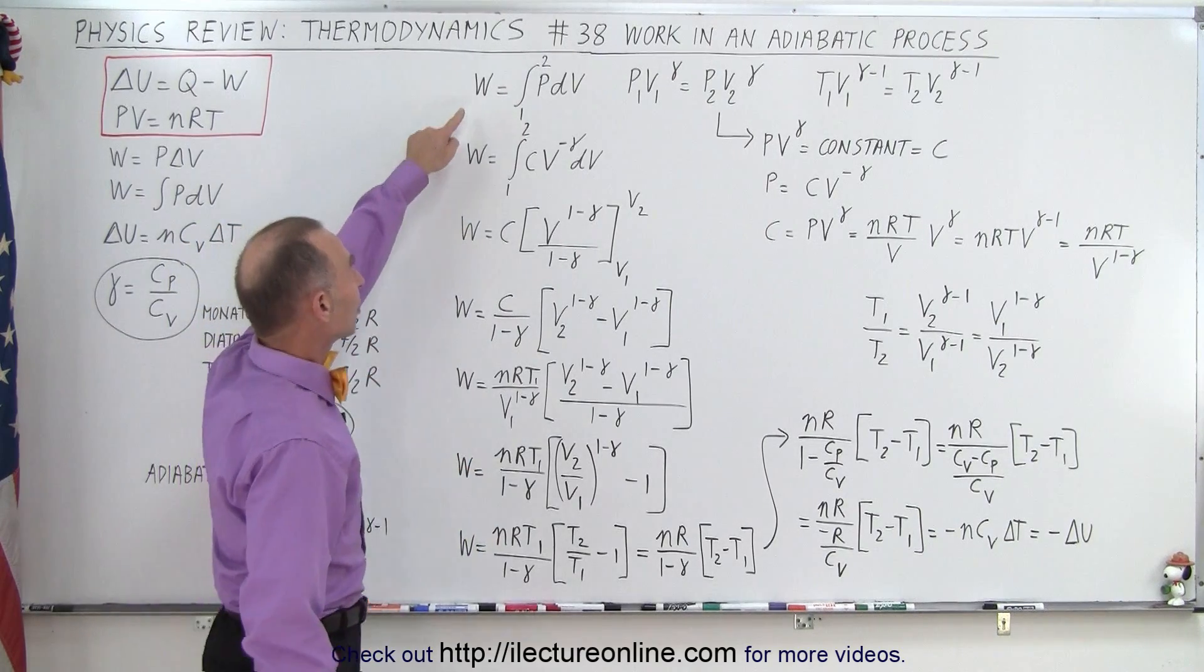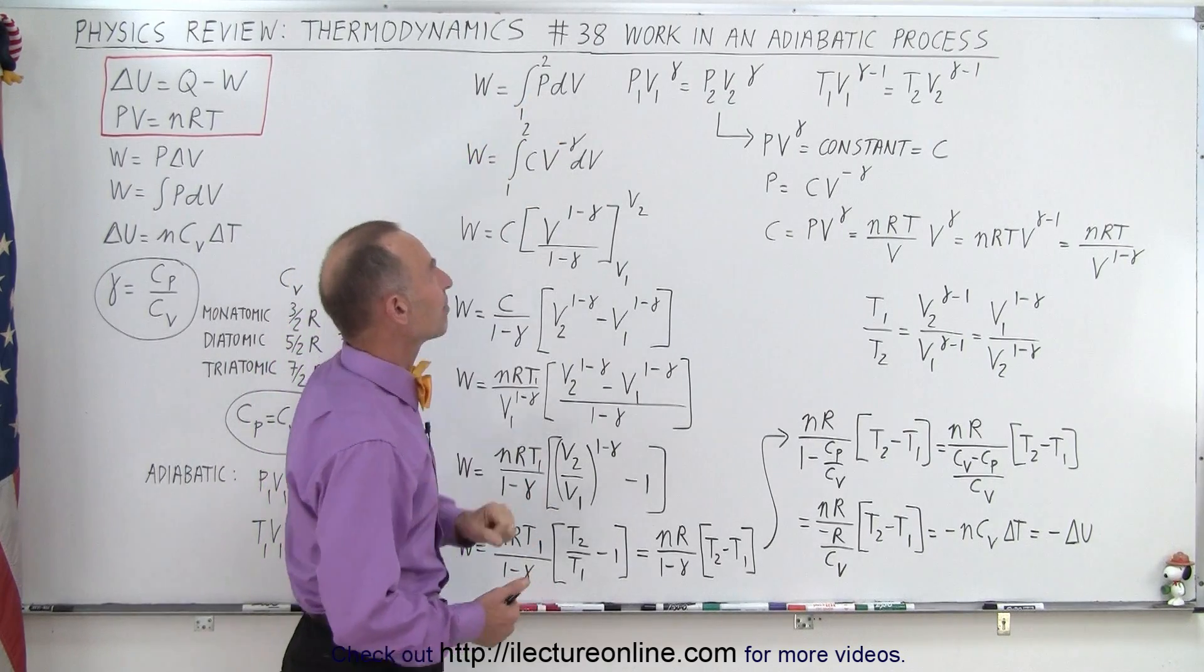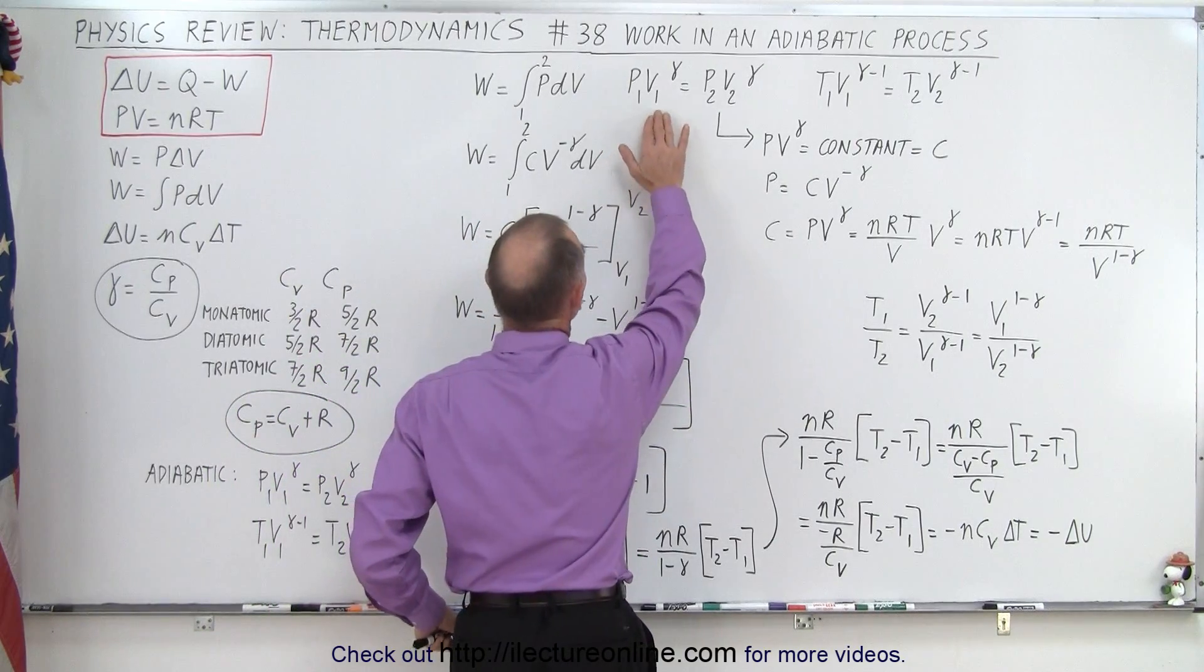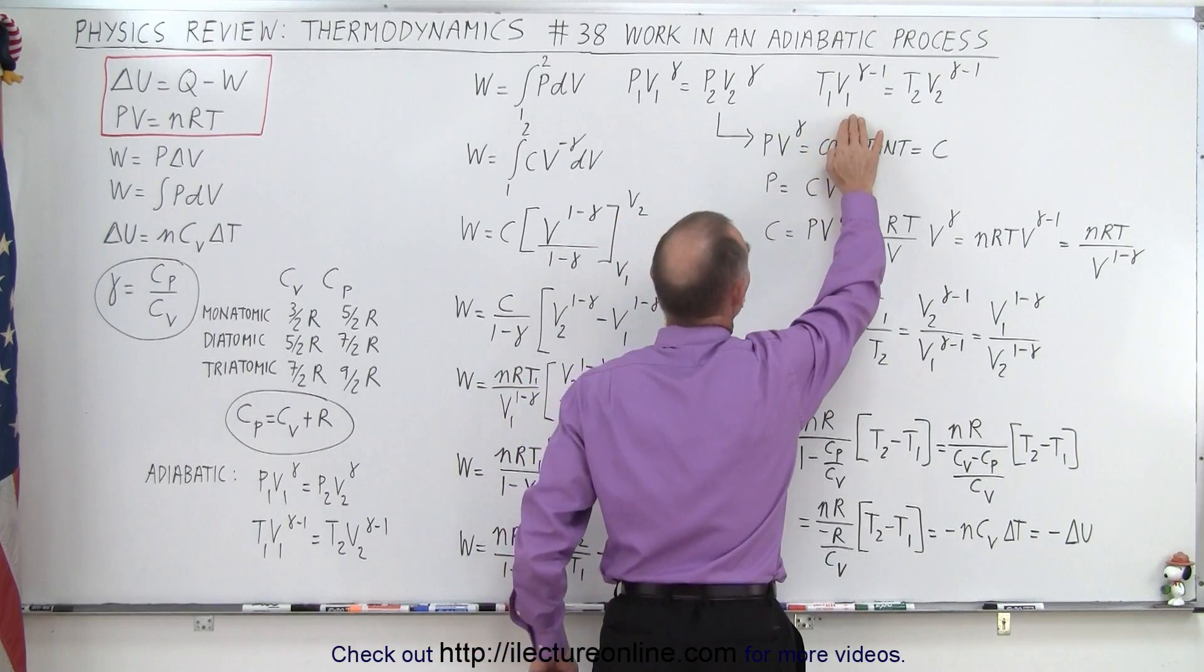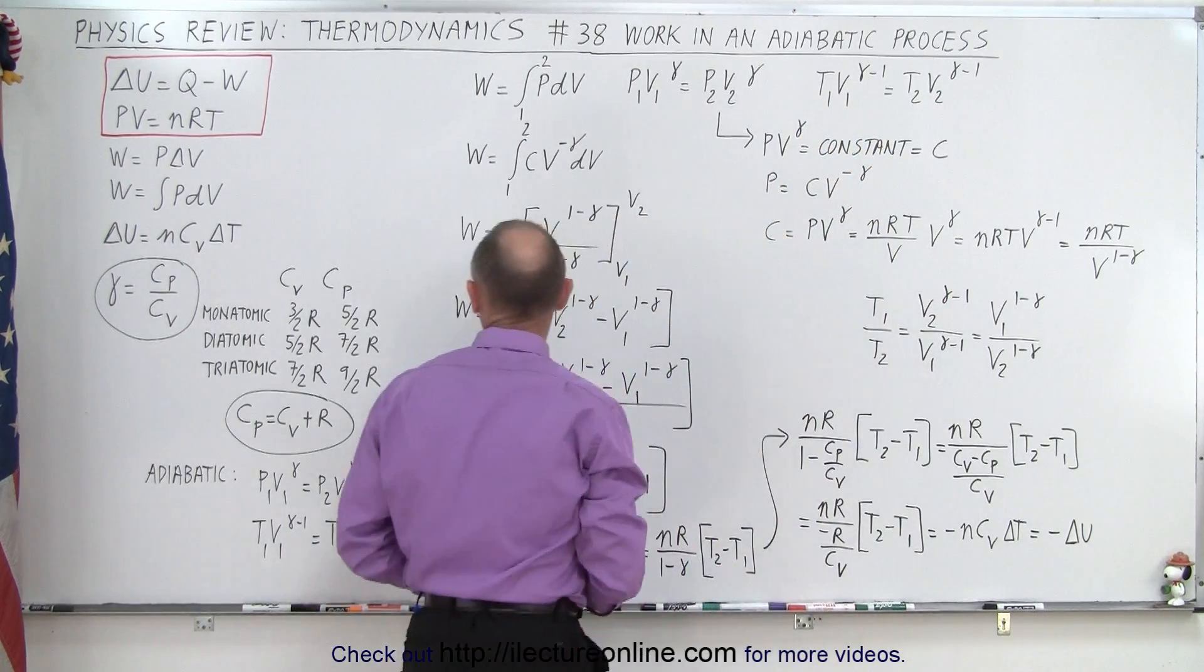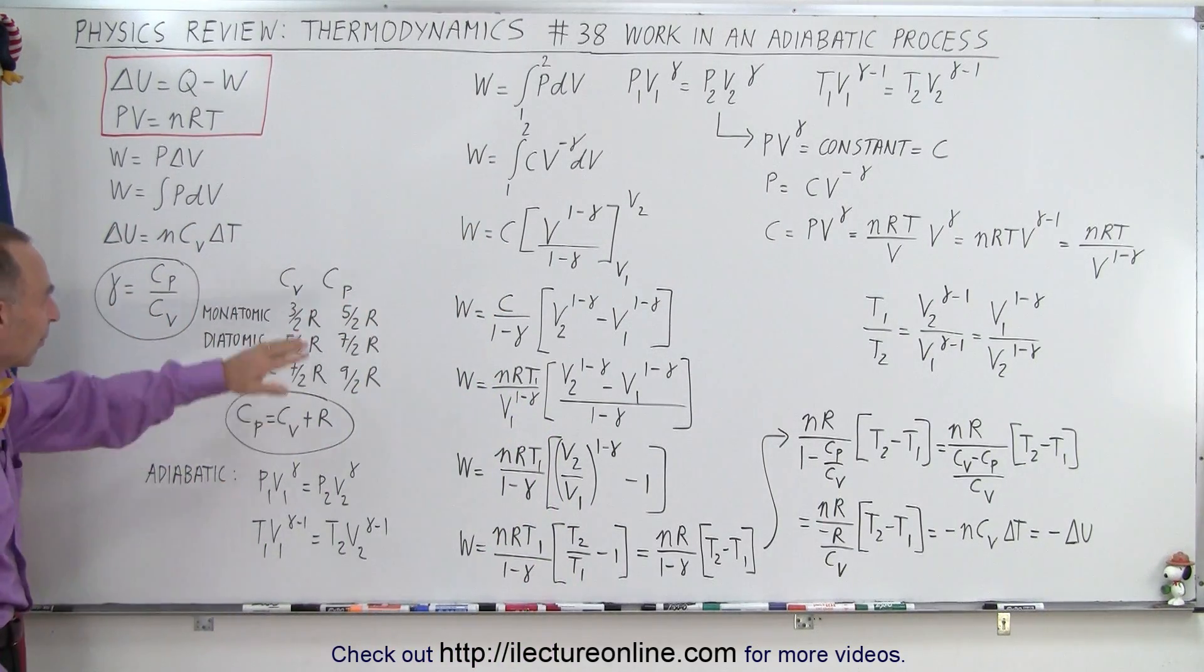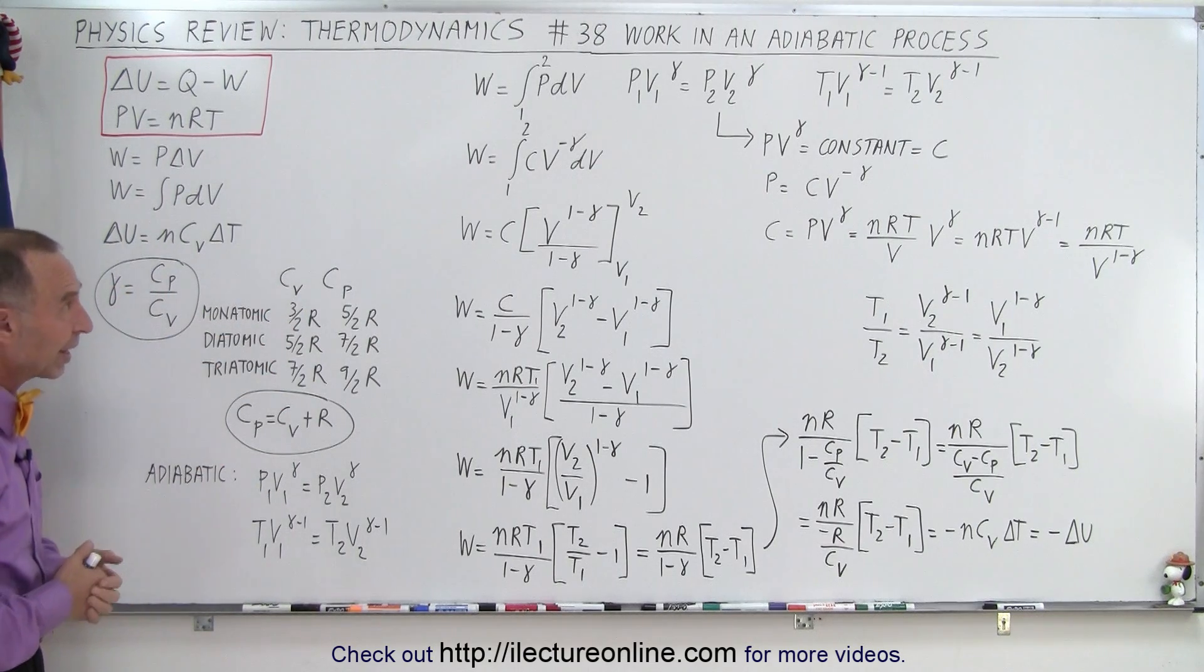We realize that the work done by any thermodynamic process is equal to the integral of PdV. And for adiabatic processes, we know that P1V1 to the gamma must equal P2V to the gamma, and T1V1 to the gamma minus 1 equals T2V to the gamma minus 1, remembering that gamma is the ratio of Cp over Cv. And depending upon what kind of gas we're dealing with, this will take on a particular value.